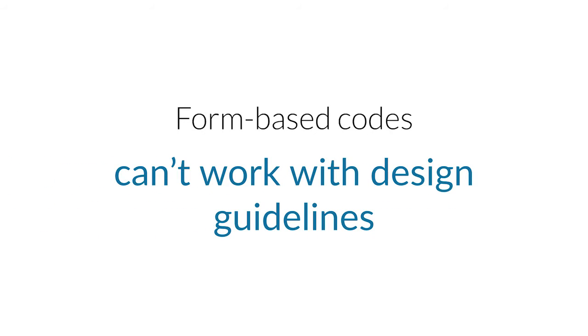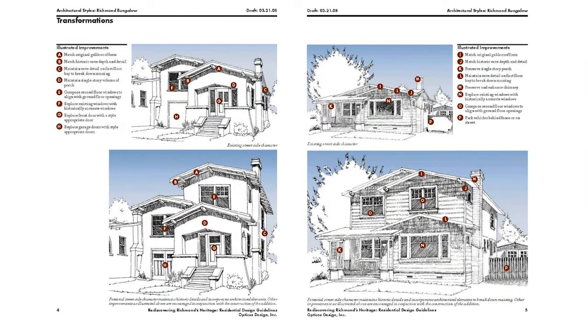Another misconception is that form-based codes can't work with design guidelines. That's not true. As I was just showing with architectural style, part of those standards are guidelines and part is mandatory standards. Sometimes you'll identify things that are mandatory, and other things that are guidelines. The test is to use guidelines when a standard can't capture the qualitative aspect of what the community is looking for — if the standard can't do that, then make it a guideline.